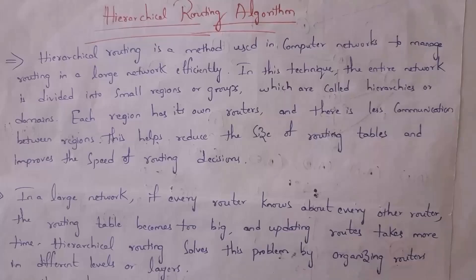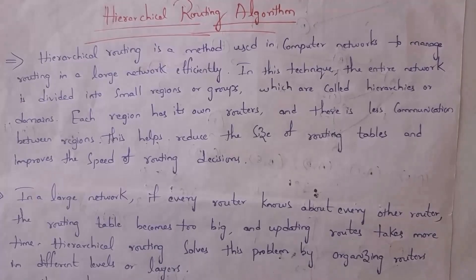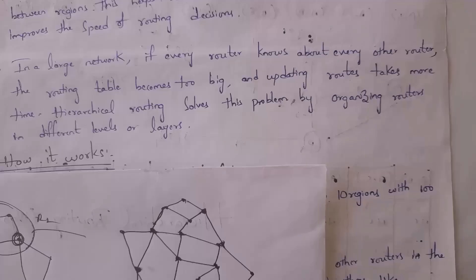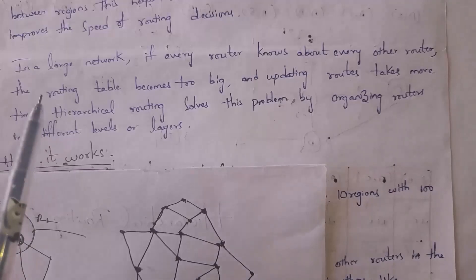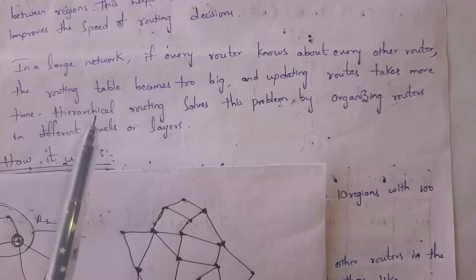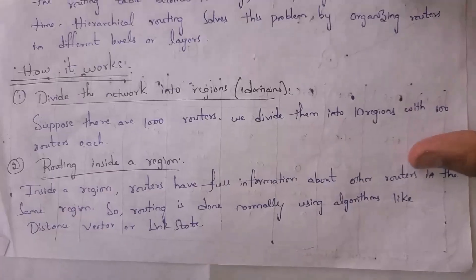In hierarchical routing, the entire network is divided into various smaller regions or groups, which are also called domains. Each region has its own routers and there is less communication between regions. Dividing the network into regions reduces the size of routing tables, and as the routing table size is smaller, communication will be faster. Hierarchical routing solves the problem of large routing tables in big networks.